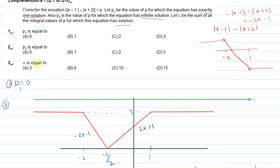For p2, which gives infinite solutions: the line y = p must coincide with the flat portion of the graph. That means y = 3, because the graph is constant at 3 on the right side, cutting infinitely many points. So p2 = 3. The first answer is A and the second answer is D.